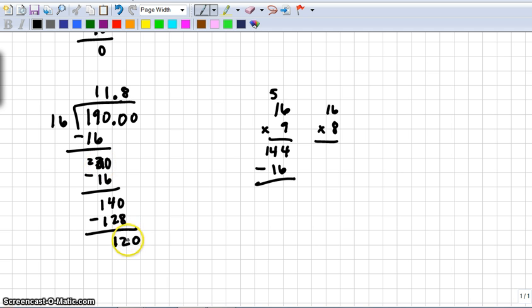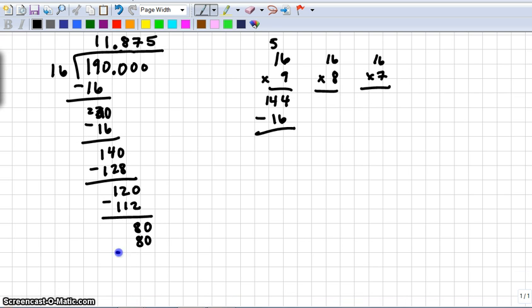Now 16 goes into 120. I know that 8 16s is 128, so I know that 7 is going to be the right number here. 7 times 16, I would just do the quick figuring off to the side. I know it's going to be 16 less than 128, so I know that that's 112. When I subtract here, I know that the number here is 8. Bring down another 0. And this time I know that 16 goes into 80 evenly. It goes in 5 times. 5 times 16 is 80. So now when I subtract, I know that I get my 0, so I know that I have completed the problem.